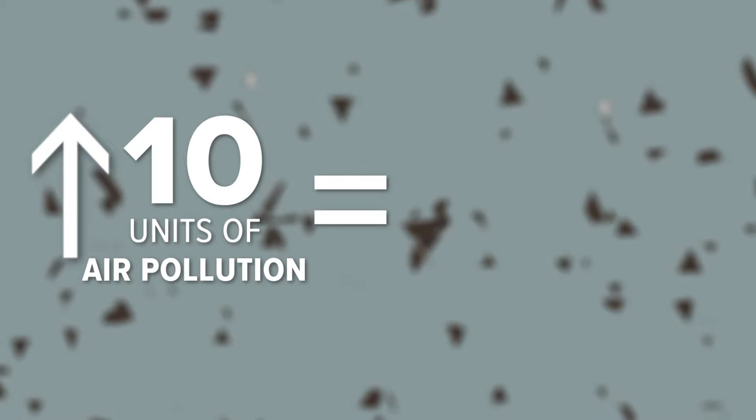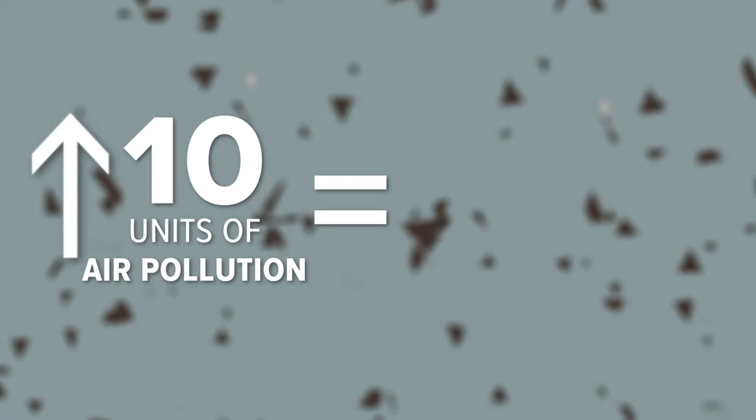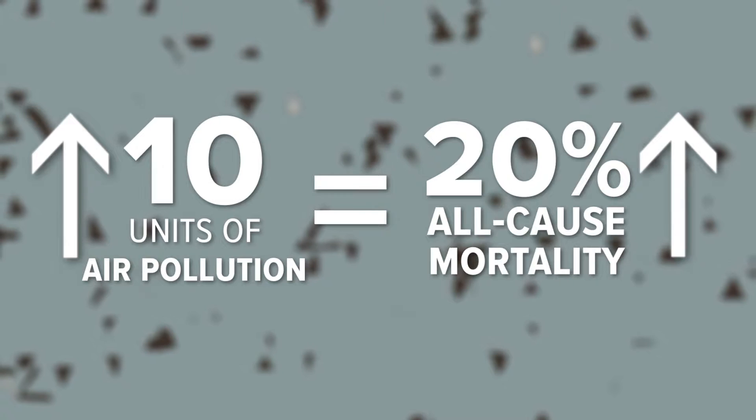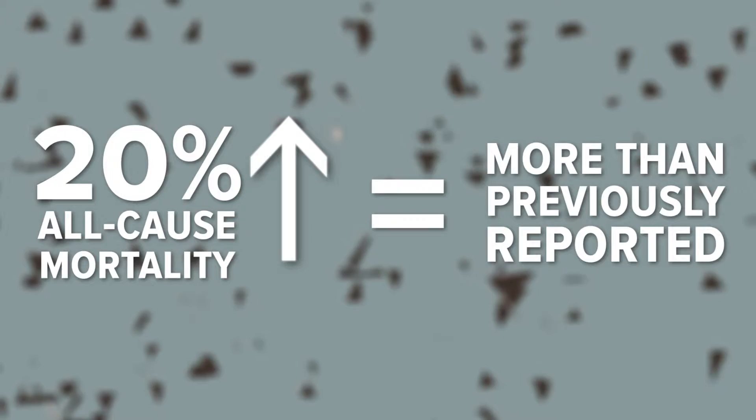and the actual effects were 75 percent to almost double that of what had been previously reported. So it seems that for about an increase of 10 units of air pollution, there seems to be about a 20 percent increase in the risk of all-cause mortality — an increase over what we had previously seen of maybe about 12 percent.